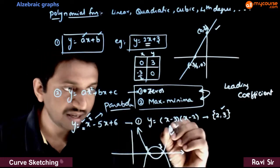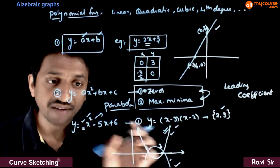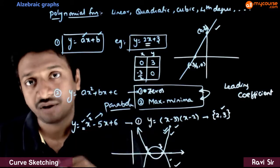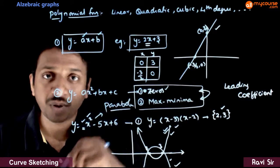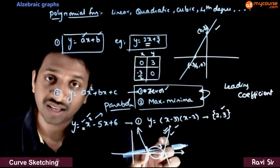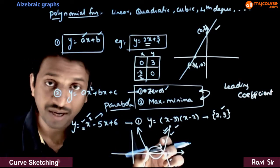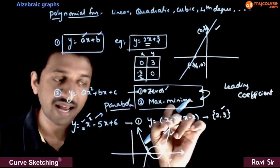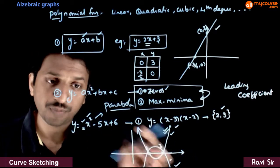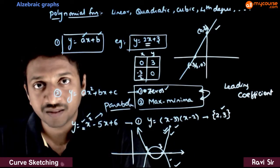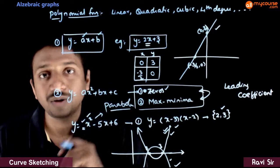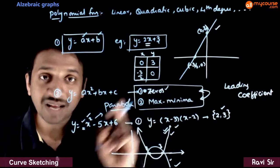So this will be the graph of this function. By this method you can draw roughly graphs of quadratic functions. First find the zeros of the polynomial — those are the points where the graph cuts the x-axis. Once you get these two points, you either have an upward parabola or a downward parabola. You get an upward parabola if the leading coefficient is positive, and a downward parabola if the leading coefficient is negative. This is how you draw the graph of y equal to ax squared plus bx plus c using the zeros of the polynomial.